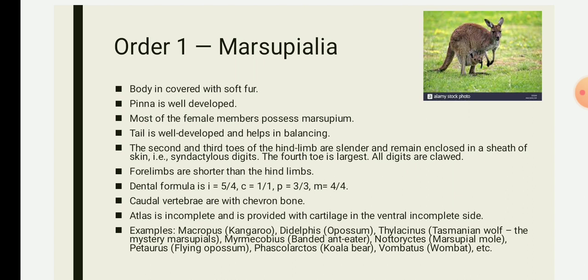In the marsupial pouch, the young ones are born immature and they develop in the marsupial pouch attached to the nipples and teats. The young ones remain in the pouch and feed on the mammary gland, which is provided with nipples or teats. The dentition in Marsupialia: 3 premolars and 4 molars are usually present — premolars 3/3 and molars 4/4. Other characters are similar to those of Metatheria. A well-known example is the kangaroo.